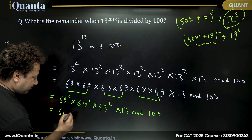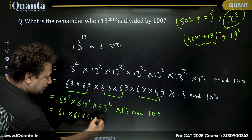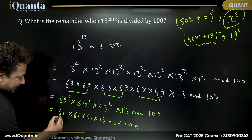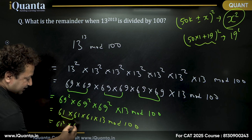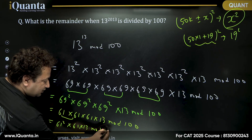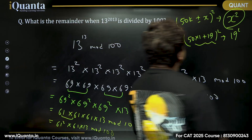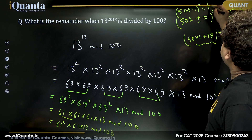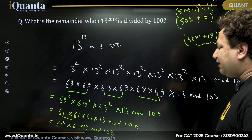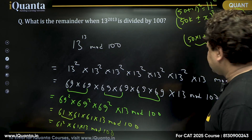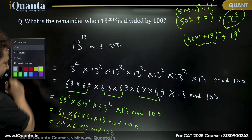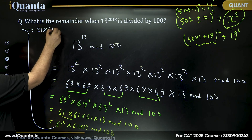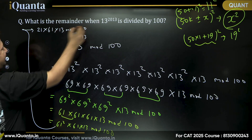We now have 61 three times, plus a 13, all mod 100. Clubbing two of the 61s: 61² mod 100. Using the same theorem, 61 = 50 + 11, so the last two digits of 61² equal those of 11² = 121, giving 21. So we now have 21 × 61 × 13 mod 100 remaining.